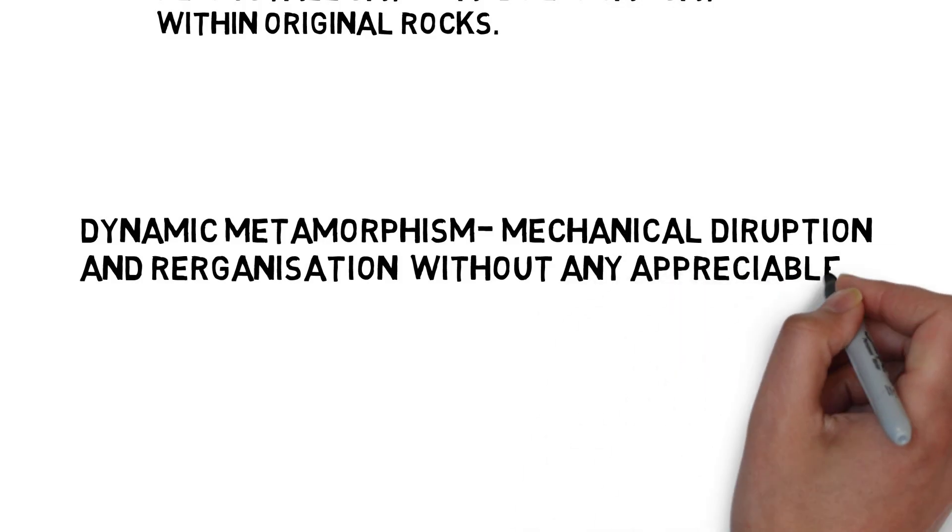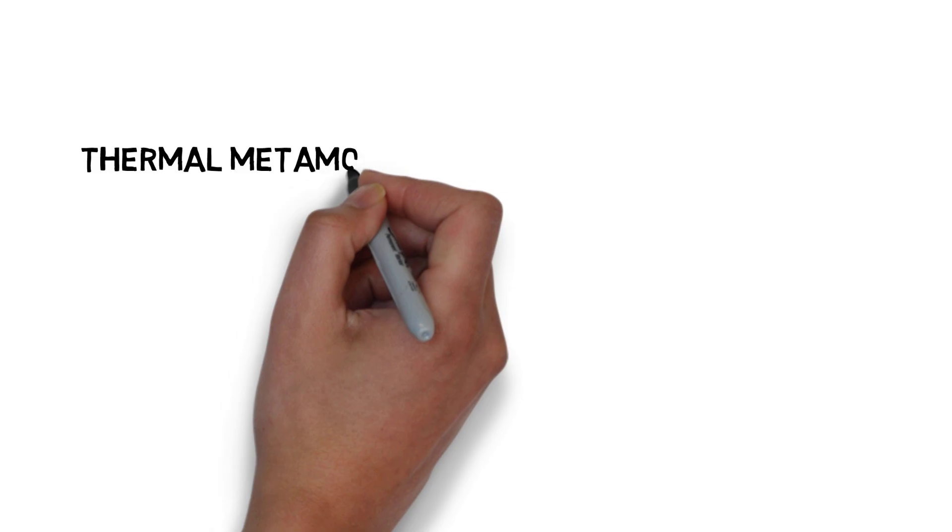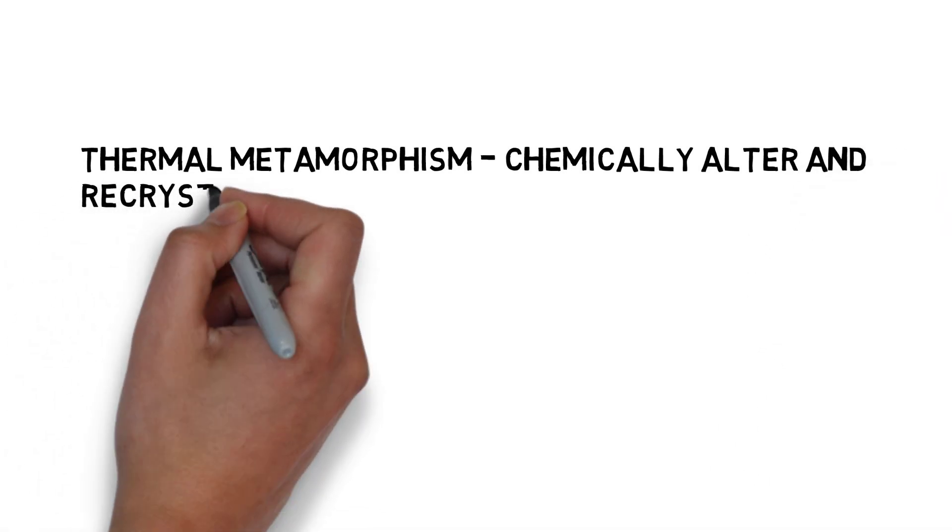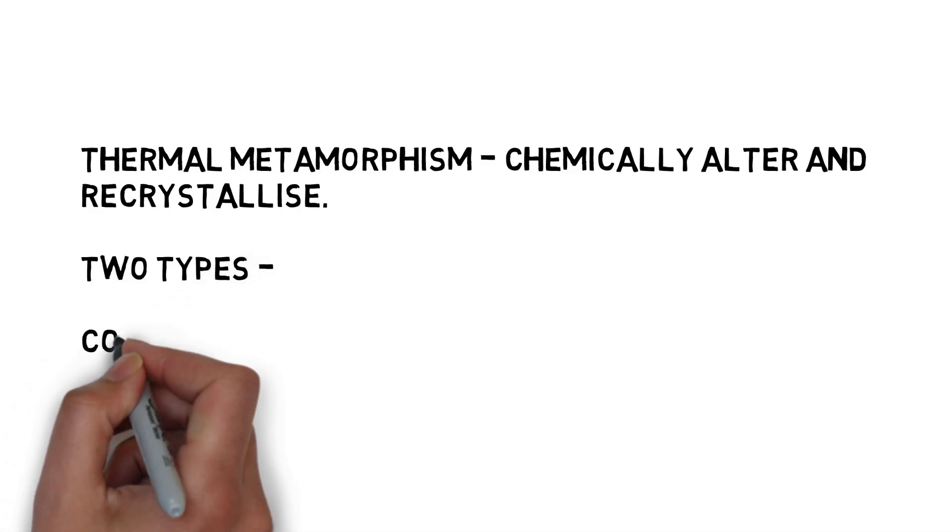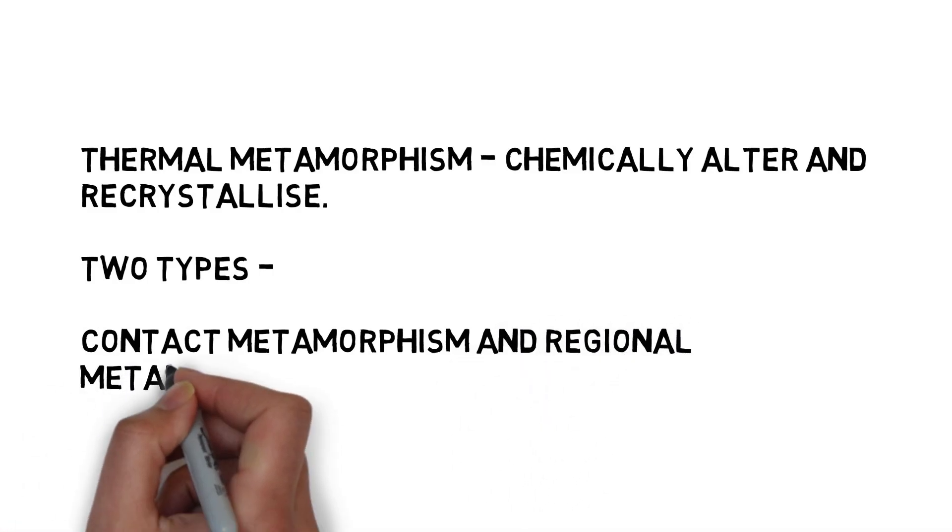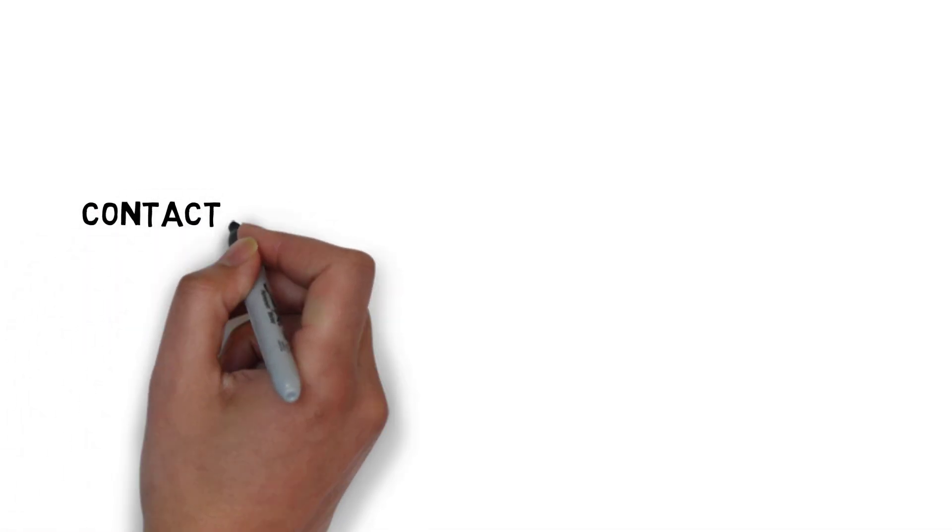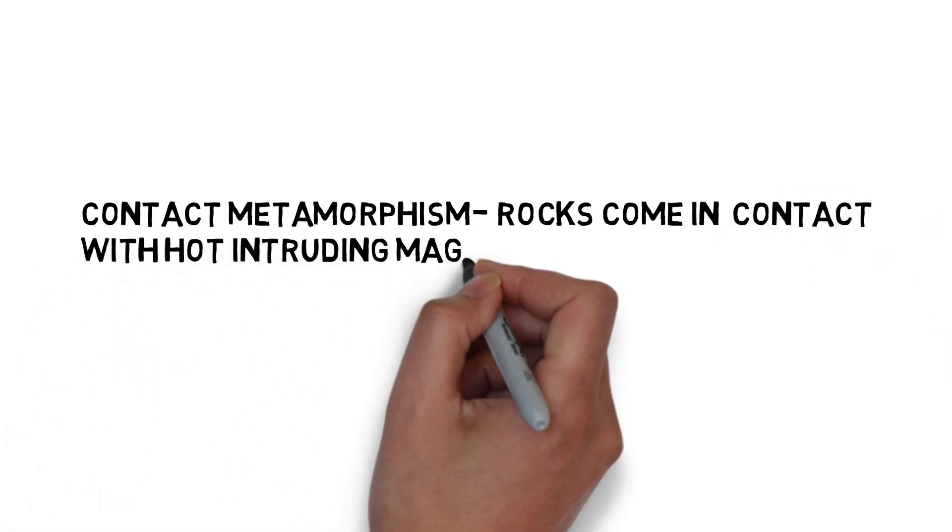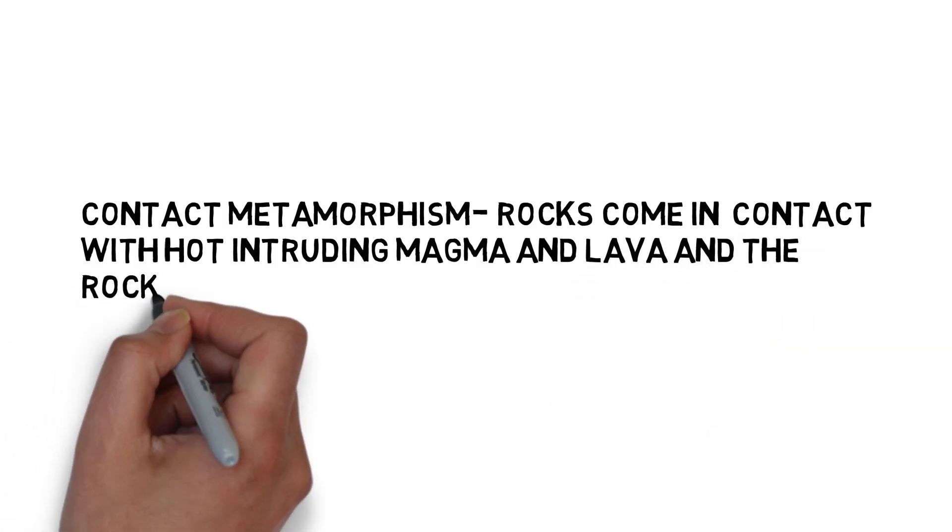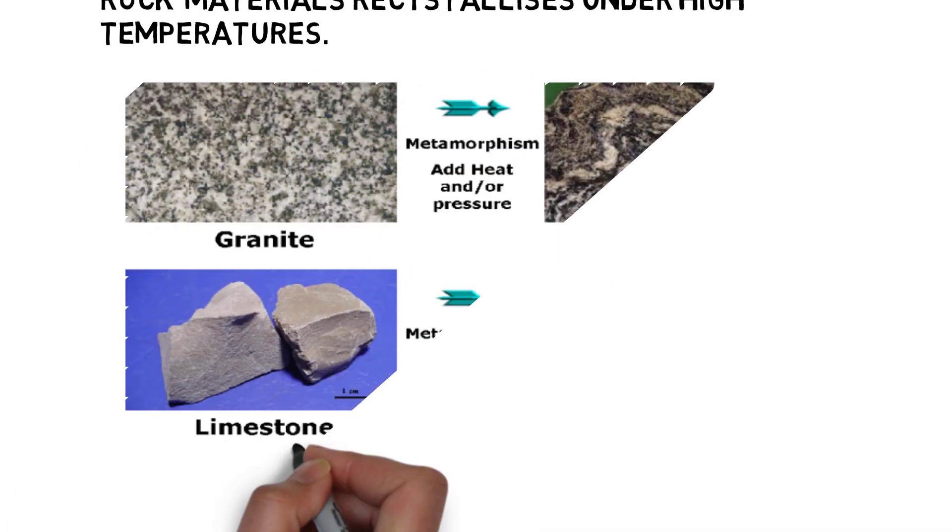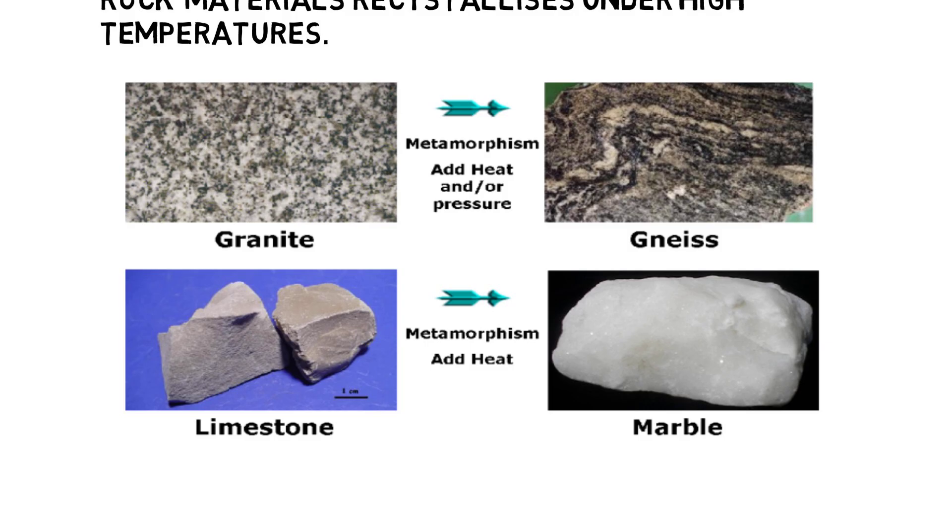Another kind of metamorphism is thermal metamorphism where the rock is chemically altered and recrystallization takes place. There are two types of thermal metamorphism. First is contact metamorphism and second is regional metamorphism. In contact metamorphism, rocks come in contact with hot intruding magma and lava and the rock materials recrystallize due to high temperature. For example, granite, which forms under the earth crust after the solidification of magma, when it comes under the contact of hot lava, it transforms into gneiss. Same way, limestone also metamorphoses into marble.